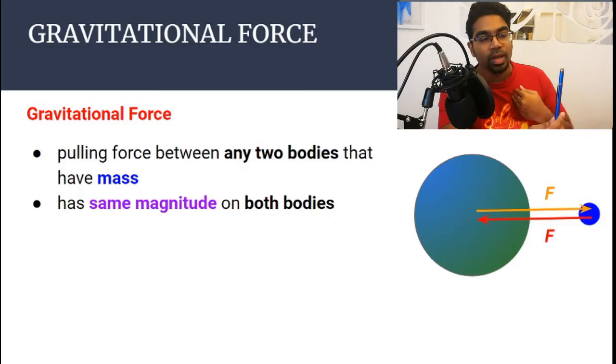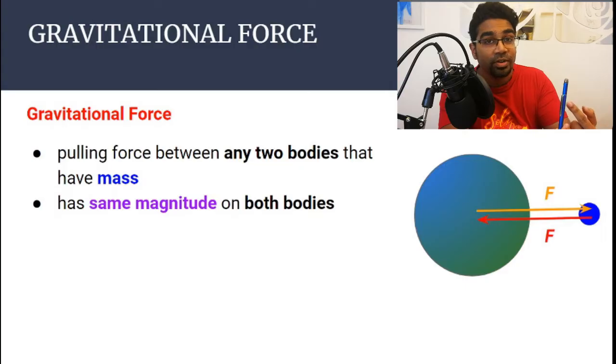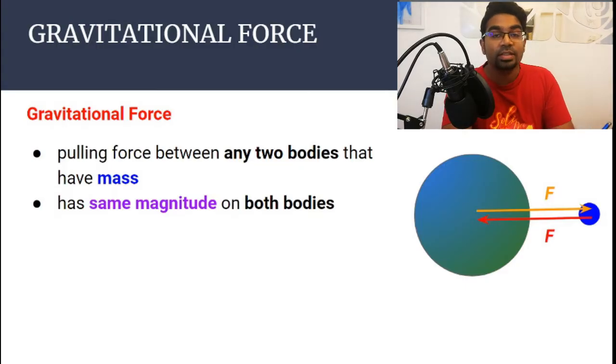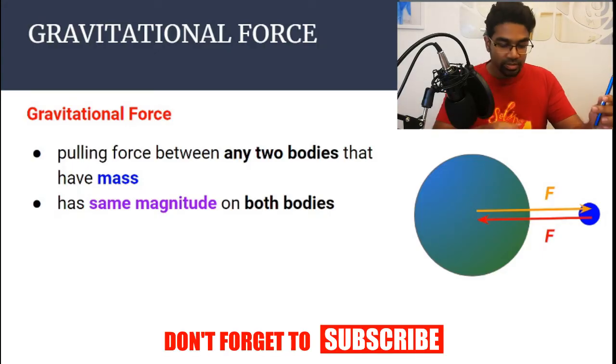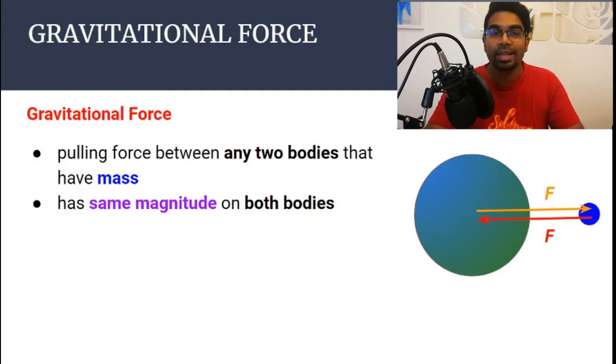I am pulling the pen with a certain gravitational force, and the pen is also pulling me with the same magnitude of gravitational force. So gravitational force exists between anything and everything that has mass. There's a gravitational force between me and the pen, between me and the table, between me and the mic. Anything that has mass can exert a gravitational force on another object that has mass.